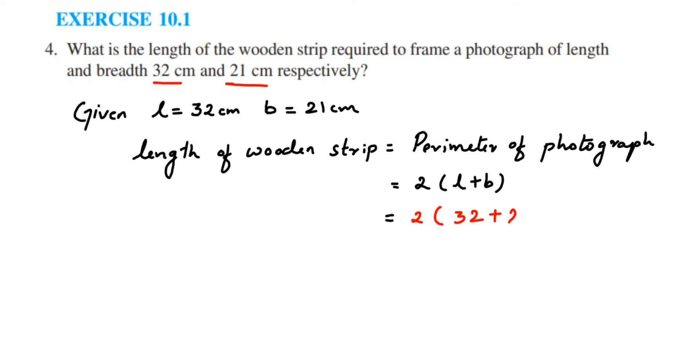When you add 32 and 21, we get 53. So 2 times 53 equals 106.